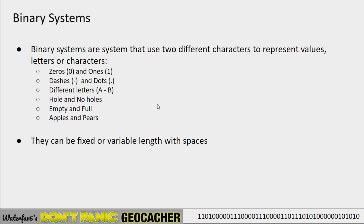Binary systems are in general just systems that use two symbols, and there are lots of variations of what those two symbols can be. They can be zeros and ones, dashes and dots, A's and B's, holes or no holes, empty or full, bumps or no bumps, or even apples and bears — anything that has two states where one is the opposite of the other. This can be used in a lot of different variations, and I'm going to talk about some of the more common variations used in geocaching mystery puzzles.